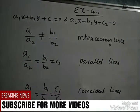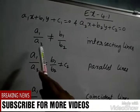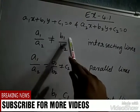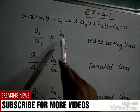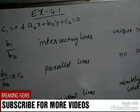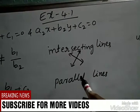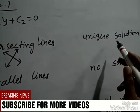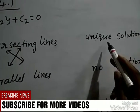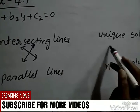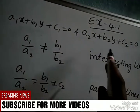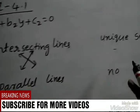The first condition is: if a1/a2 is not equal to b1/b2, then these two lines are intersecting lines. When two lines intersect, there exists only one solution — a unique solution.